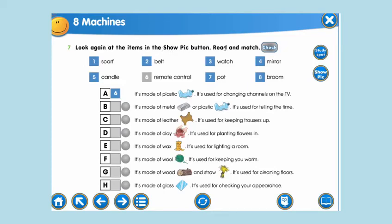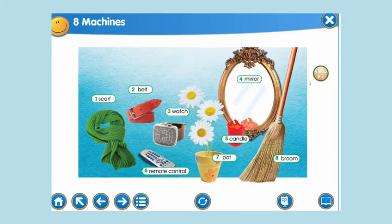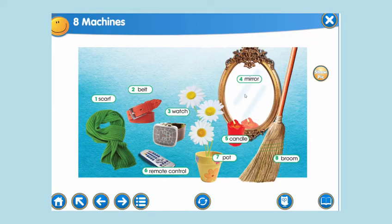Pick button and read and match. Now, let's show pictures. This is our new words. Let's remember it once more. Балылар, 7-ші тапсырмада сүретте көрсетілген заттарды орны мен тауып қойып қиыстырып жазуымыз керек. Олай жасай жаңа сөздерді қайтадан қайталаймыз: scarf, belt, watch, mirror, candle, pot, remote control, broom. Read and match.